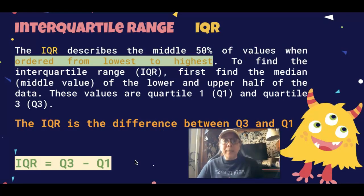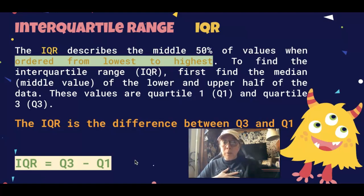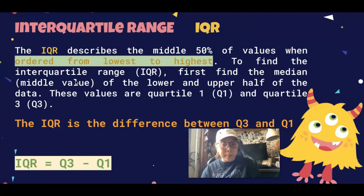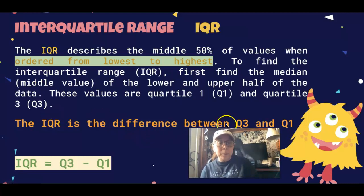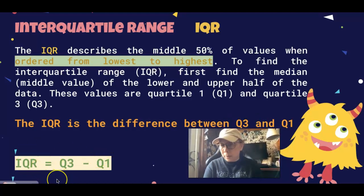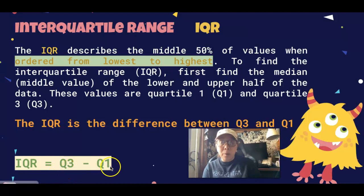The next thing we're going to look at is the interquartile range, or IQR. The IQR describes the middle 50% of values when ordered from lowest to highest. To find the IQR, first find the median, then the lower quartile and the upper quartile. Then find the difference between the upper quartile and the lower quartile using the formula: IQR = Q3 minus Q1.